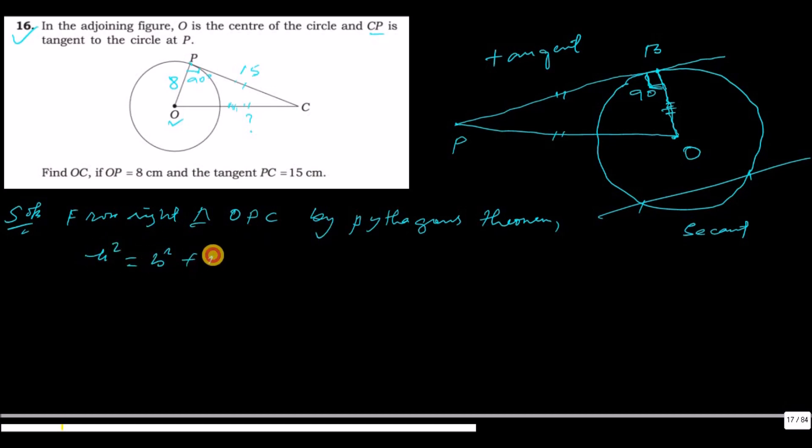OC square equals to OP square, OP square, plus PC square. PC is 15. PC square means 15 square. Implies OC square equals to 8 into 8, 64, plus PC 15 square, 225.